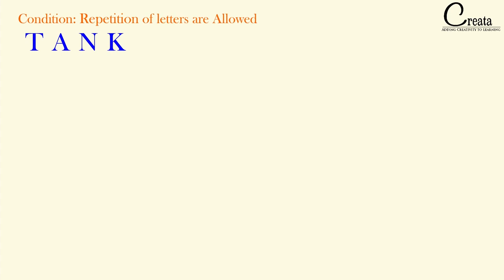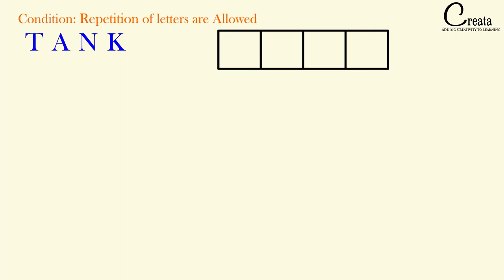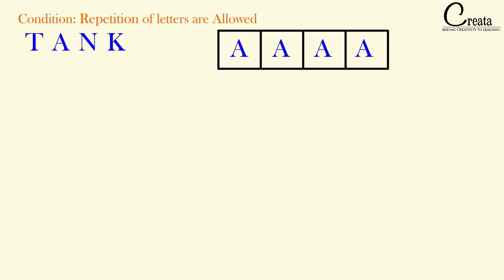Now, if we modify the question and remove the condition that repetition of letters is not allowed — in this case, the repetition of letters is allowed. It means we can repeat any of the letters. Suppose we have taken the letter T in the first place, then the second place is also open to the letter T. So the question is the same: how many four-letter words can we form from T, A, N, K where the repetition of letters is allowed?